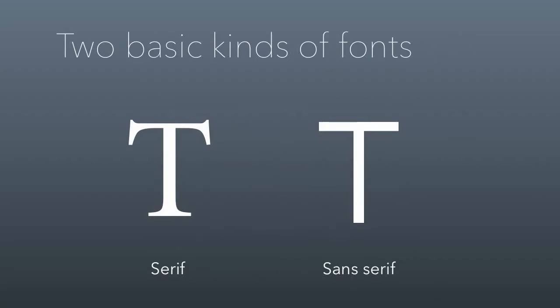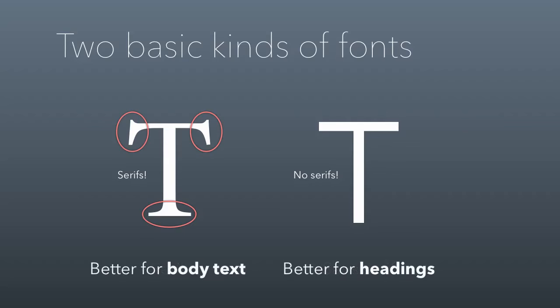One of the things that video will tell you is the difference between a serif and a sans-serif font. A serif font has serifs — those little dangly things at the ends of letters. A sans-serif font, where "sans" is the French word for "without," uses letters that don't have serifs. As a general rule, serif fonts are better for body text and sans-serif fonts are better for headings.